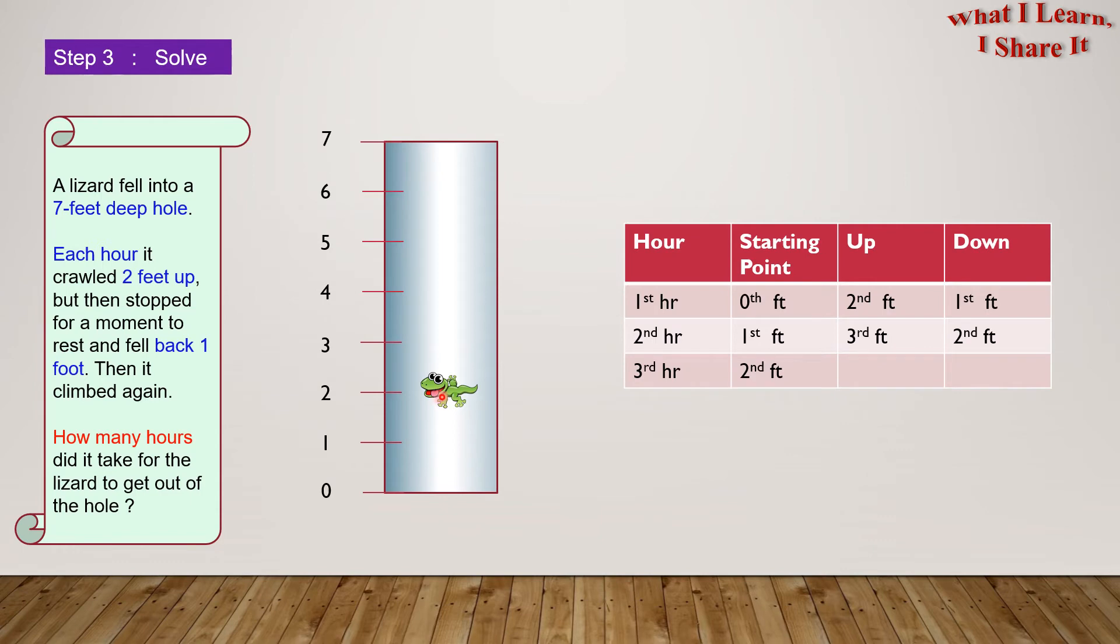In the third hour, it'll start from the second foot, and go up to the fourth foot, but then slide down to the third foot. In the same way, in the fourth hour, it'll start from the third foot, and go up to the fifth foot, but then slide down back to the fourth foot.